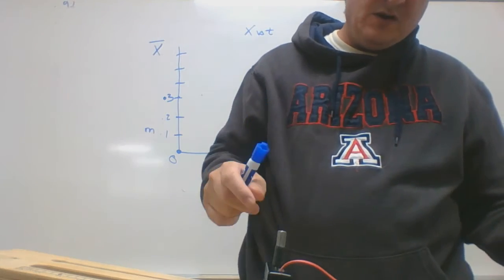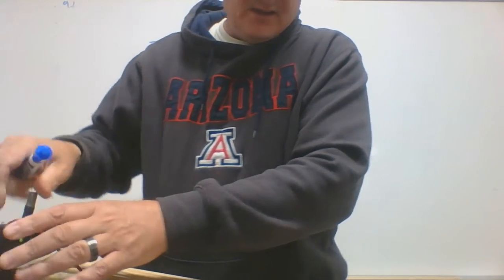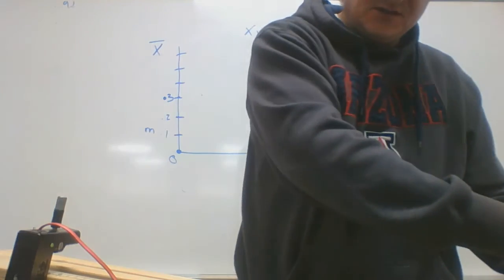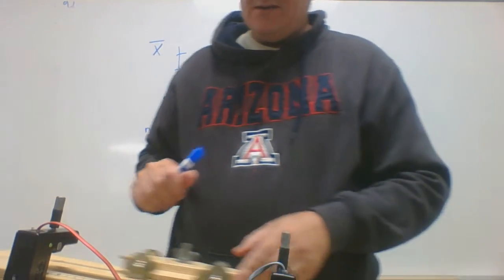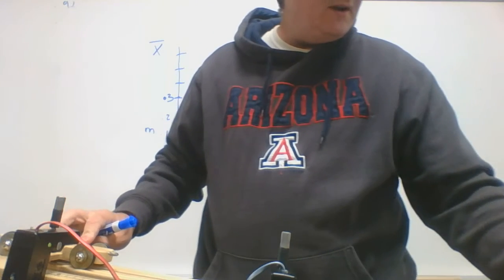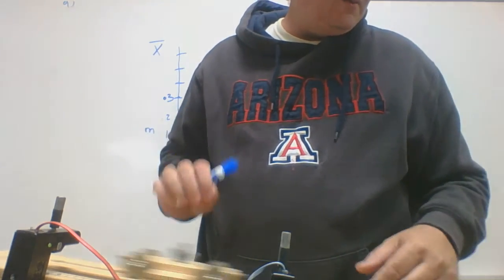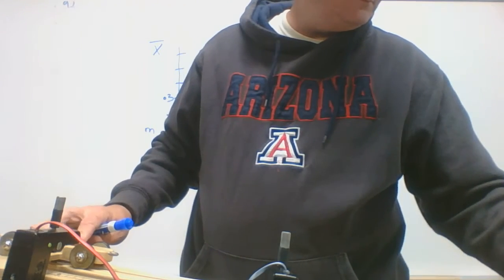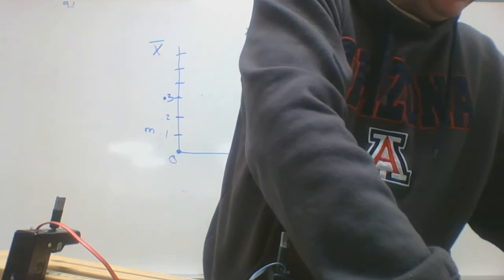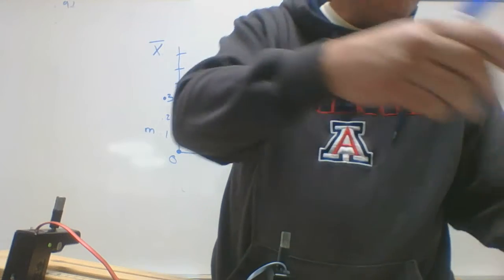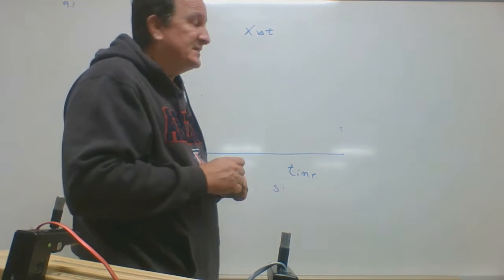I'm going to put one photogate at 0 and the other photogate at that position, which we said was 30 centimeters or 0.3 meters, and then I'm going to release it and measure that interval. When I do that, I get a time of 0.56 seconds, or 0.6 seconds if I round.